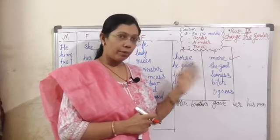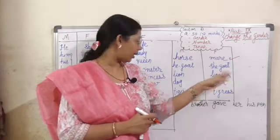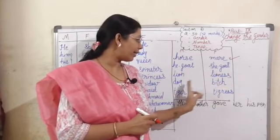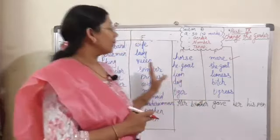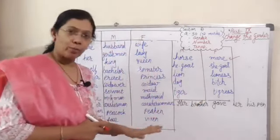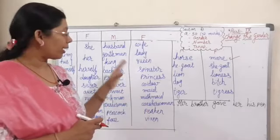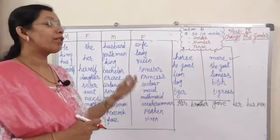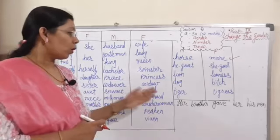He-goat — she-goat. Lion — lioness. Tiger — tigress. Dog's feminine gender was also asked — converting from masculine to feminine. We have to remember these words. Apart from these, other words can also be asked.